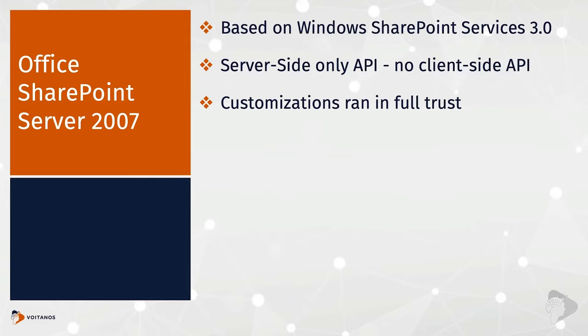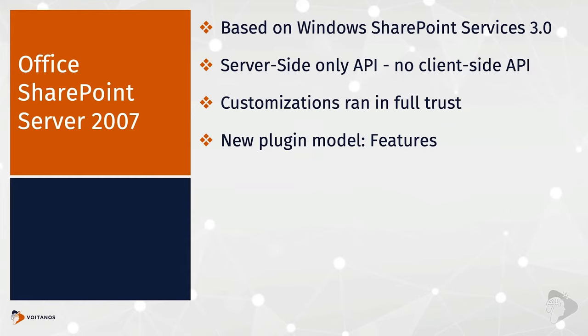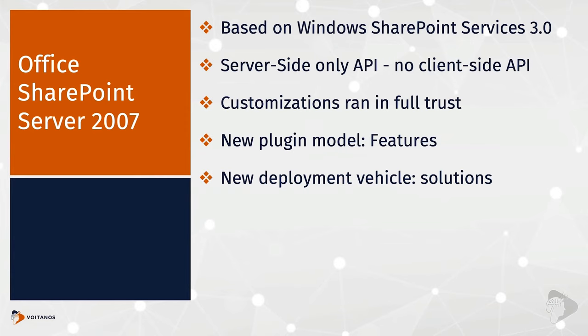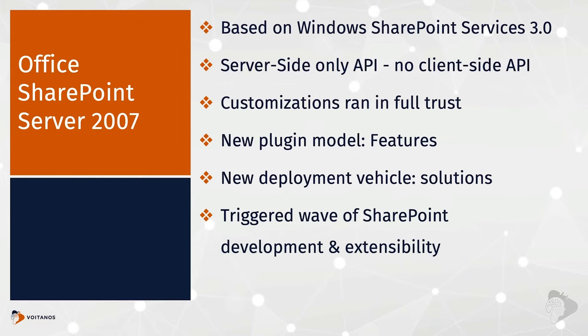This version introduced two concepts with significant and long-lasting impacts on SharePoint developers. The first was a plugin model called Features — with a capital F — which enabled developers to provision lists and other artifacts in SharePoint. The second concept was something called a solution: a special file that acts as a package for all customizations to be deployed to the SharePoint server. One solution uploaded to a single server in the SharePoint farm would deploy those customizations to all servers throughout the entire farm.